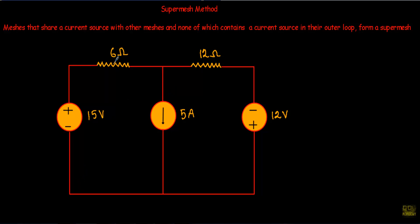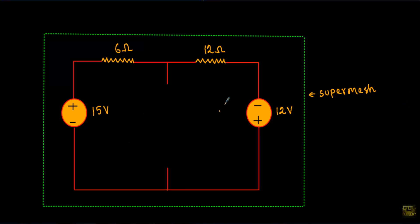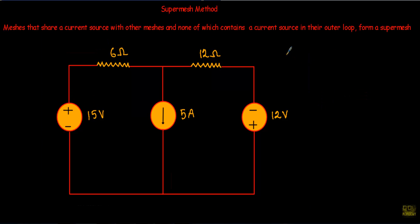Look at this circuit. This is mesh number one and this is mesh number two. Within mesh one and two they share a common current source of 5 amperes, and in their outer loop they do not contain any current source. If I merge mesh one and mesh two I will get our super mesh, formed by replacing this current source with an open circuit. This first mesh and the second mesh merge, and the region inside this broken line forms our super mesh.